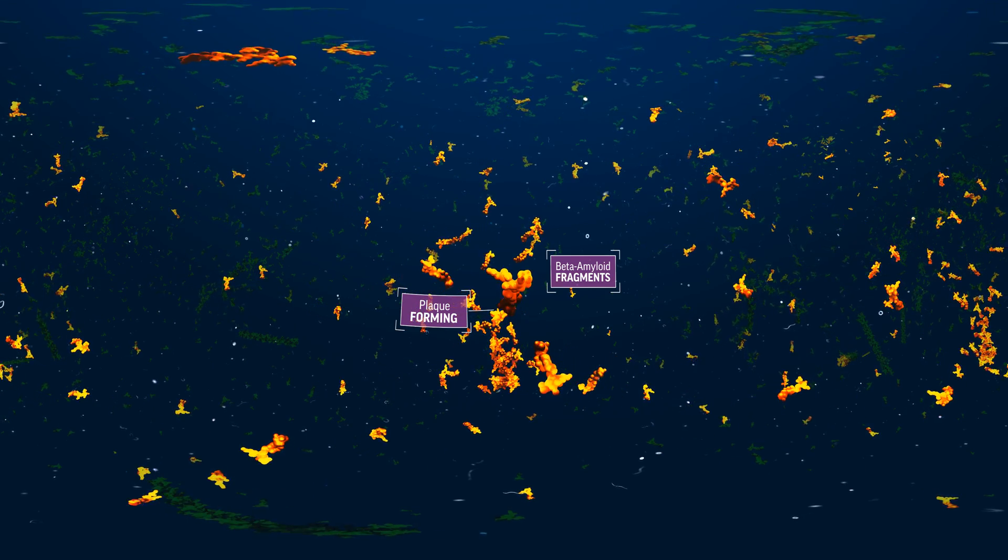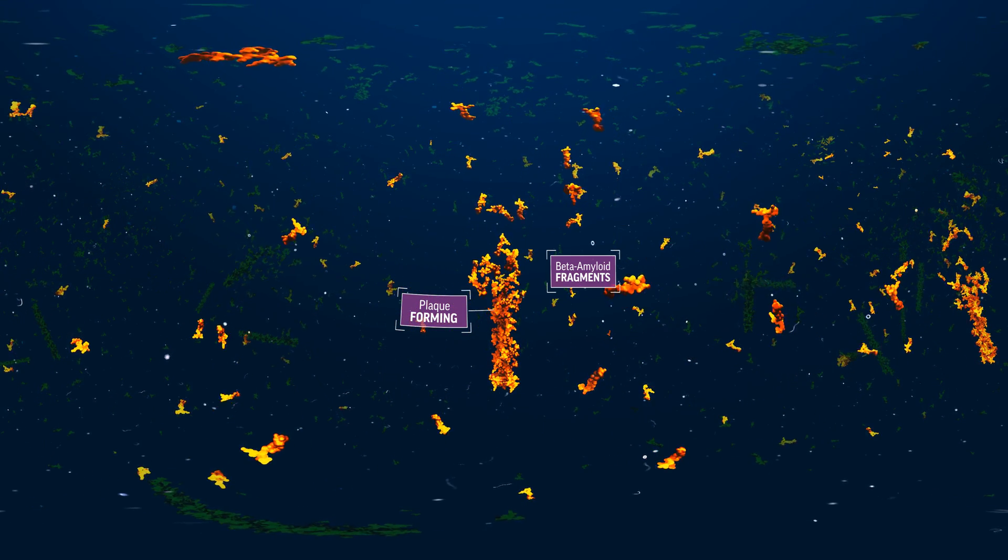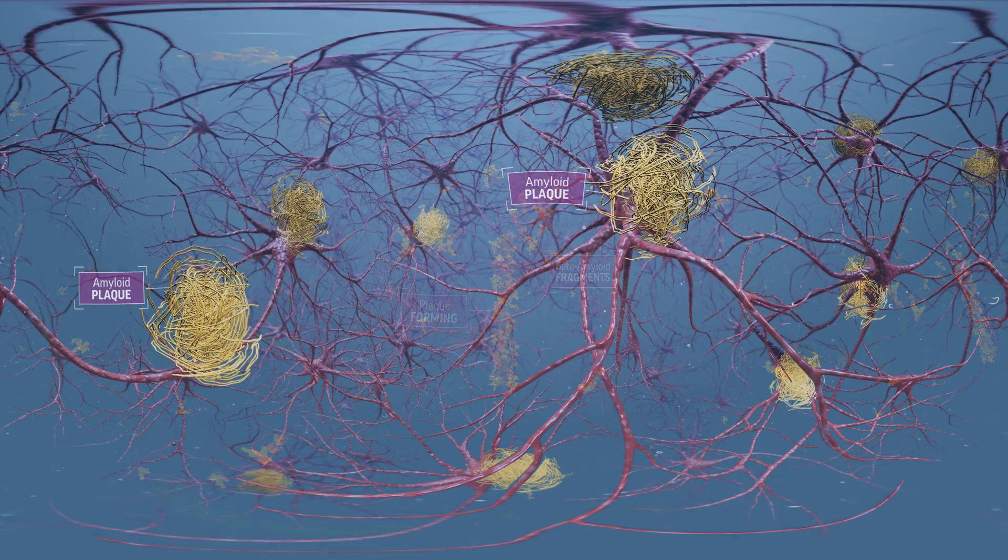Plaques are formed as more and more beta amyloid builds up between neurons. Many healthy older adults harbor some amyloid plaque, but in Alzheimer's disease the plaque is more extensive.